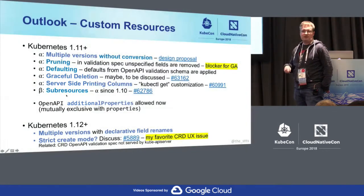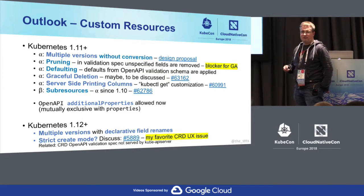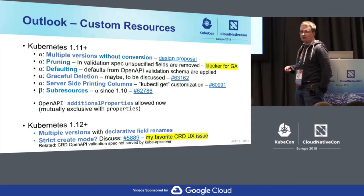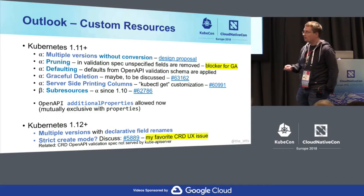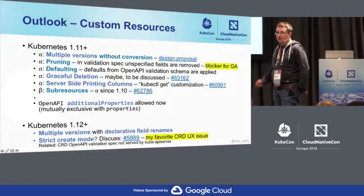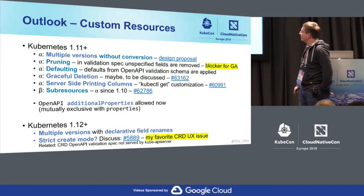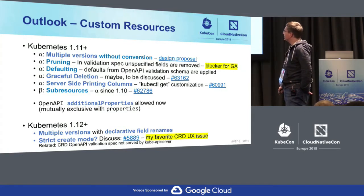Who's waiting for sub-resources? Who knows what sub-resources are? We're still discussing whether we promote it, but we only have one critical issue we have to fix at the moment. This looks good, and this might be beta in 1.11, so everybody can use it in clusters which don't have alpha features enabled.